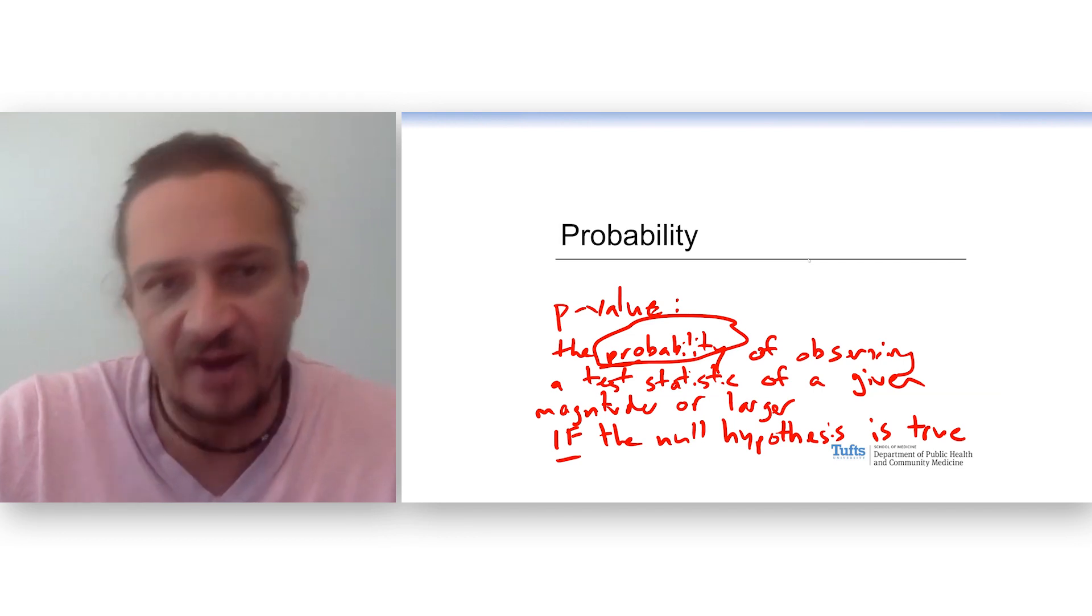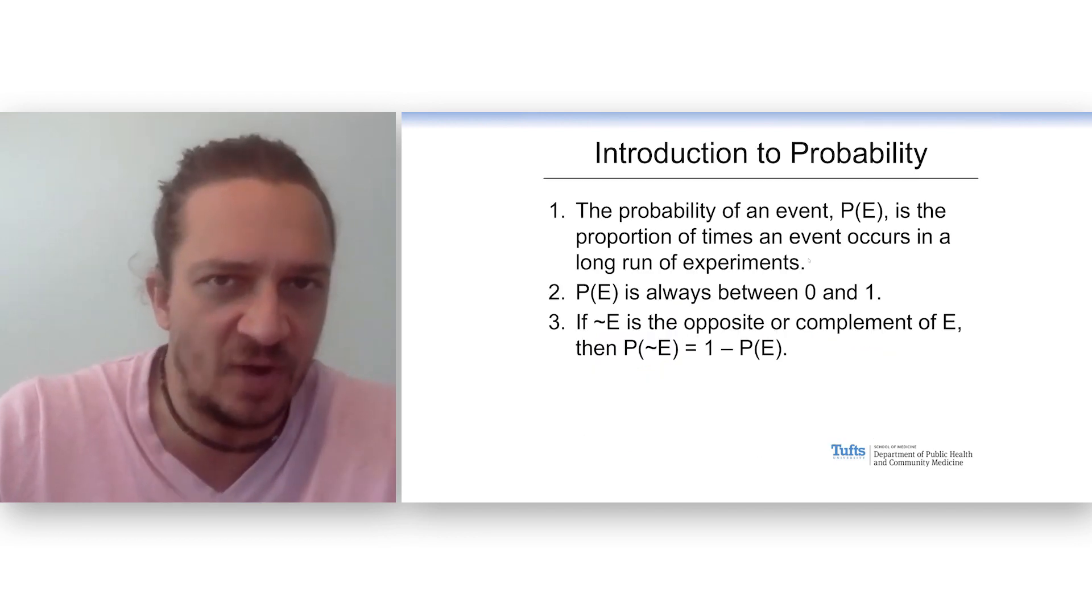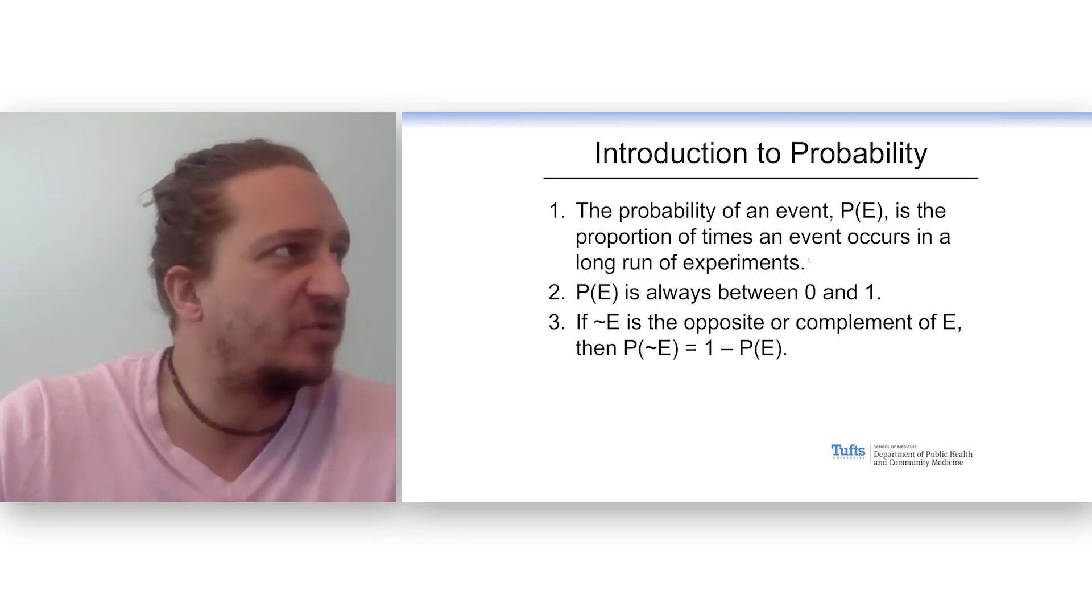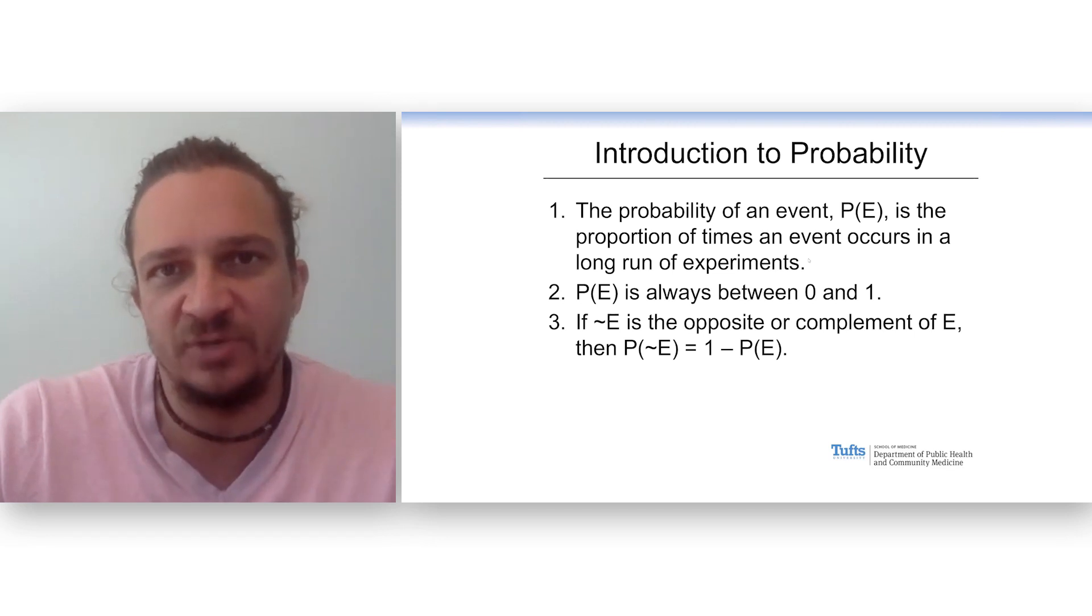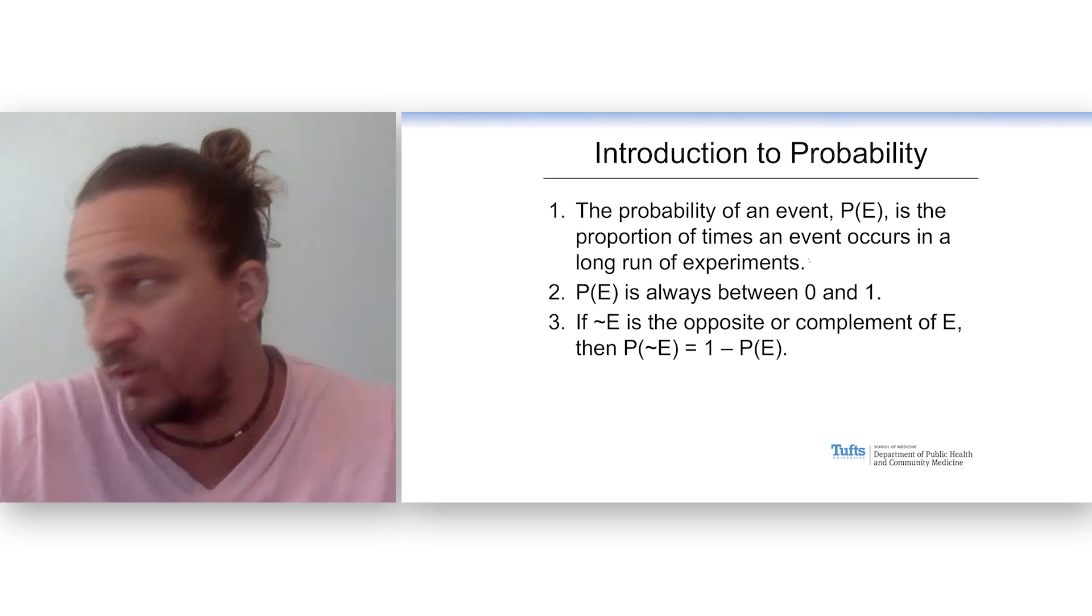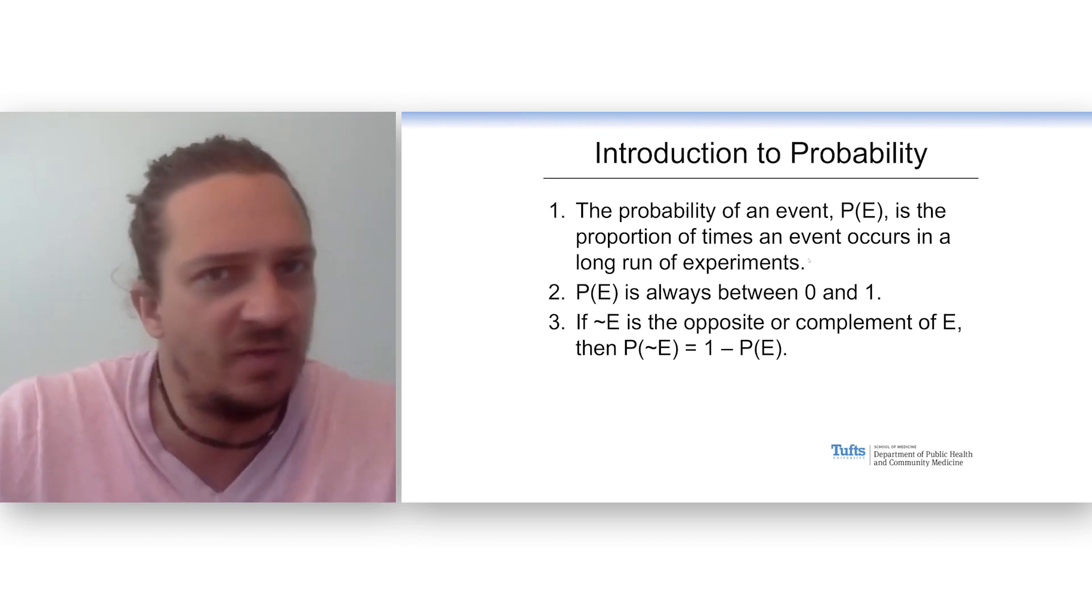Probability is covered a lot in many statistics courses. If you took one as an undergrad, you may have done examples where you have a bag filled with black and white ping pong balls and what's the probability of choosing a black one, two white ones in a row. For statistics, you really only need to understand a few things about probability. First is that we're going to think about probability as what is the chance that something would occur in a long run of experiments. So if you did something over and over again, what would you get?